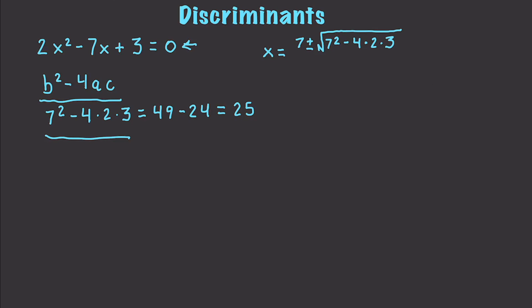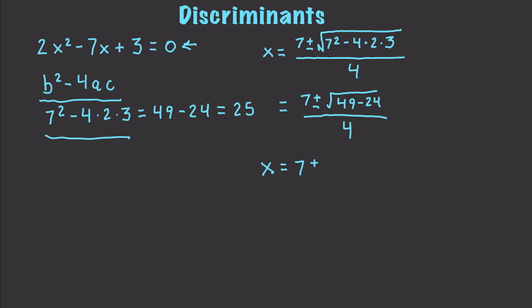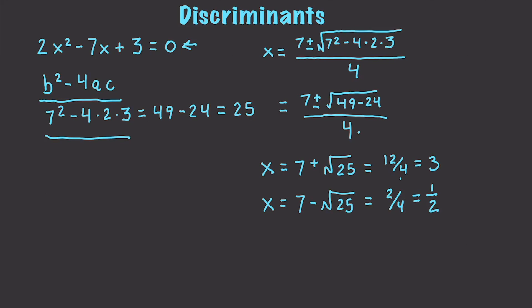This is going to be divided by 2a, which equals 4. Working this out: 7 plus or minus the square root of 49 minus 24, divided by 4. So x equals 7 plus square root of 25, which is 12 over 4, equal to 3. And our other value for x is 7 minus square root of 25, which is 2 over 4, equal to one half. Both are real numbers, confirming our discriminant result.